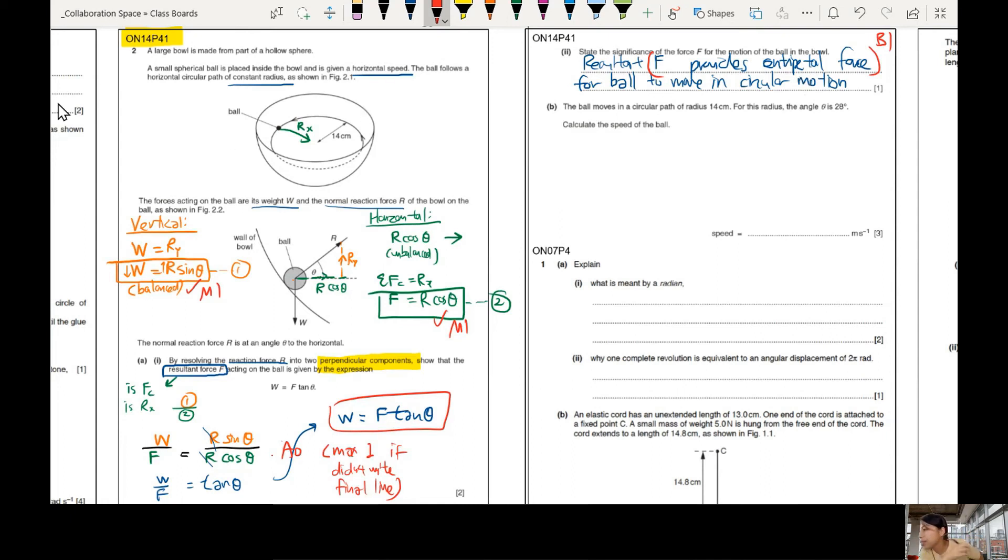Okay, last one. Three mark question. Give you three minutes to try this out. Now the ball moves in circular path radius R. For this radius, angle is 28 degrees. So they're giving you data. Calculate V. What equation to use? How to use? Tip. You will want to use the one we derived just now. W equals to F tangent theta.